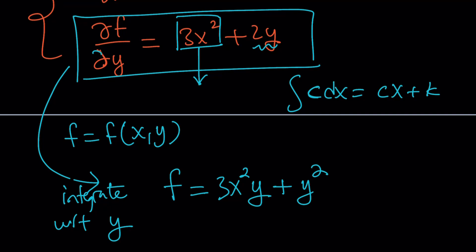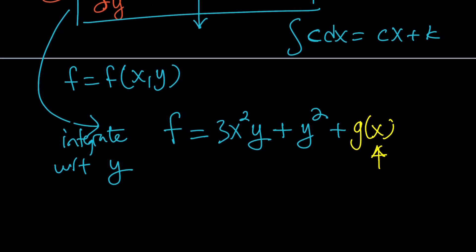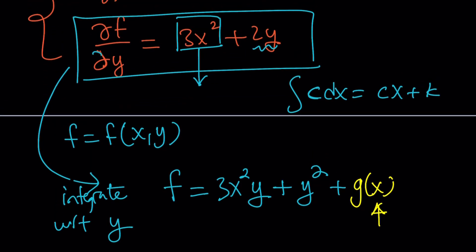But we don't stop here. Normally when we do indefinite integrals, we have to add a constant, because when we differentiate a constant it becomes zero. But here, we're not just adding a constant c — because with respect to y, a function of x is also considered a constant. That's what's fun about these equations: you use functions instead of constants. So we attach a function of x — let's call that g of x. When you differentiate g of x with respect to y, its derivative is going to be zero because it only contains x.